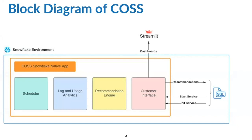The building blocks of the cost app include a logs and users analytics module, a recommendation engine, a scheduler, and a customer interface. In addition to the Snowflake Native App, the cost app has an external component — Streamlit dashboards. The logs and users analytics module is responsible for processing usage information from Snowflake account users and Snowflake system functions, with the help of various Snowflake stored procedures and user-defined functions.